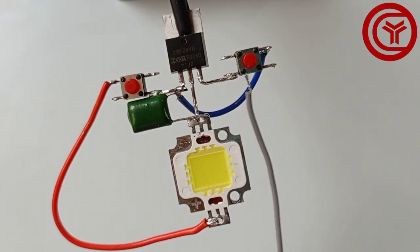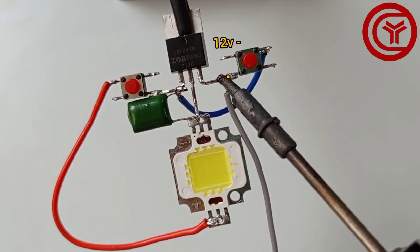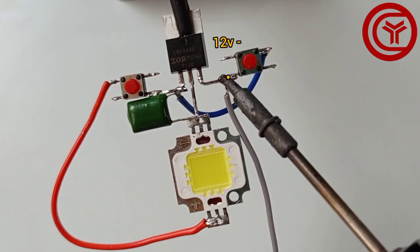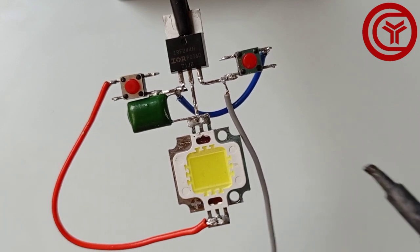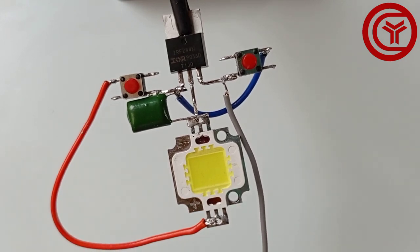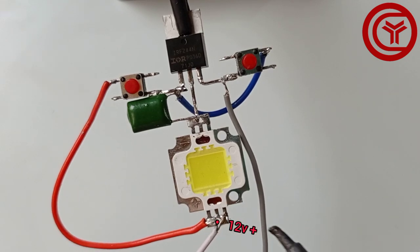Solder input DC negative wire on source pin of MOSFET. Solder input DC positive wire directly with load positive.